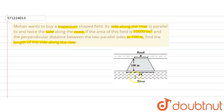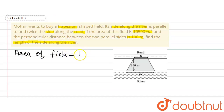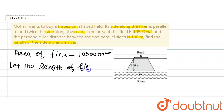We are supposed to find out the length of the side along the river when the distance between the two parallel sides is given as 100 meters, and these sides are such that if the side along the road is x, then the side along the river is twice that, i.e., 2x. This is the shape of a trapezium. Let the length of the field along the road be x.